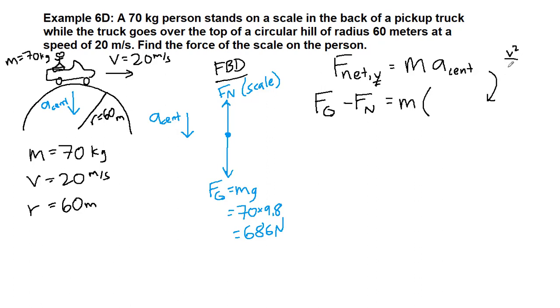In this case we can use the acceleration can either be v squared over r, or it can be r omega squared. We've seen one use of each of these so far. We have velocity, so we should use the one that already has velocity in it.